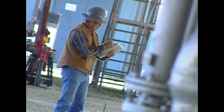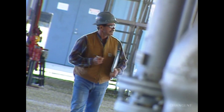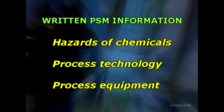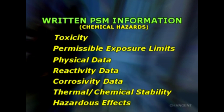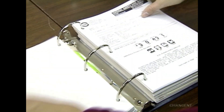Employers must compile written process safety information before conducting any hazard analysis. The safety information will help the employer and employees involved in operations to identify and understand the hazards posed by the process. The hazards of the chemicals used or produced, the technology of the process, and the equipment used should all be covered. Required chemical hazard data includes: toxicity, permissible exposure limits, physical data, reactivity data, corrosivity data, thermal and chemical stability data, and hazardous effects of inadvertent mixing of different materials. In many cases, an MSDS, or material safety data sheet, meets this requirement for each chemical.